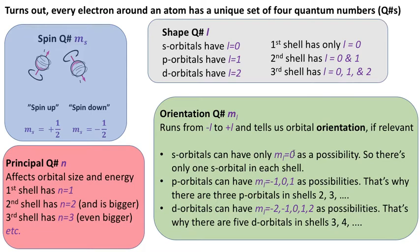M sub l can only be zero. P orbitals, remember, have an l value of one. So that means m sub l could be minus one, zero, and one as possibilities. And that is why there are three p orbitals in shell, starting shell two and in shell three and so forth.